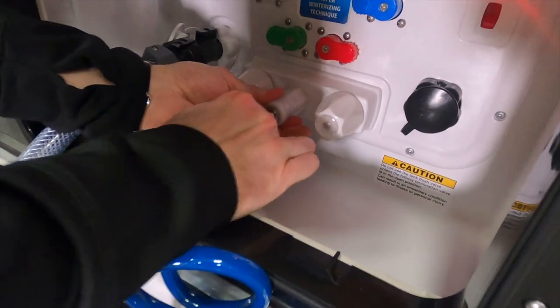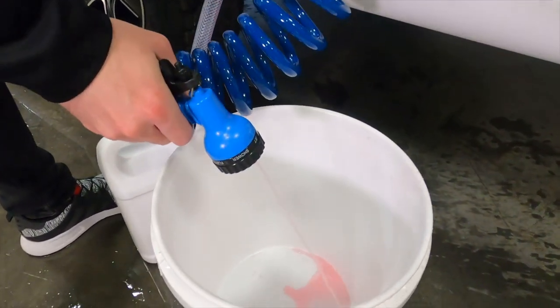Back on the outside of the camper, you'll want to hook up your external shower hose and turn on the hot and cold tap to run antifreeze through them.